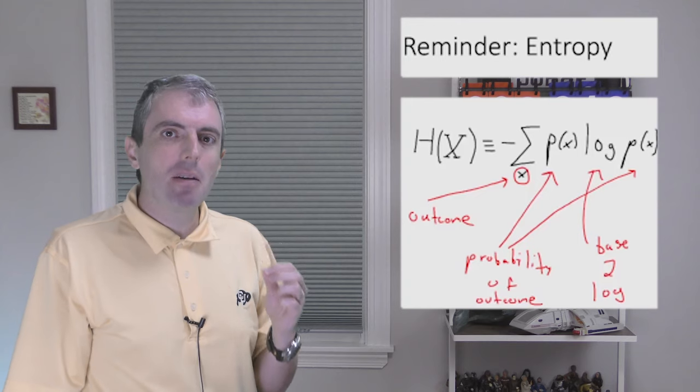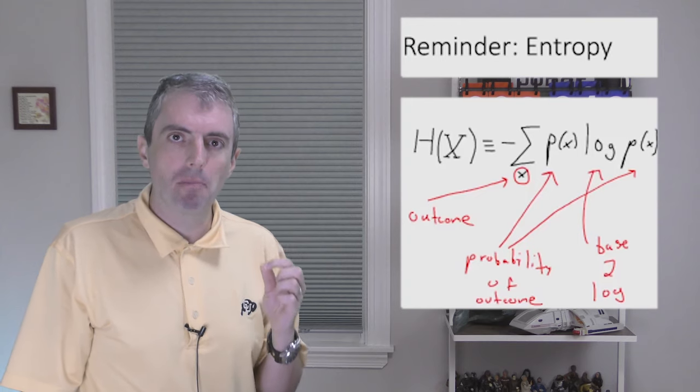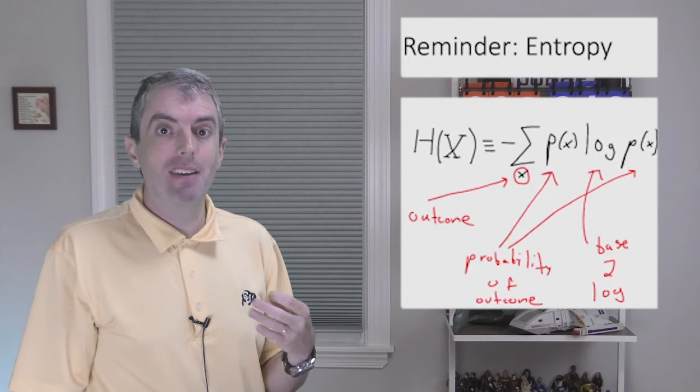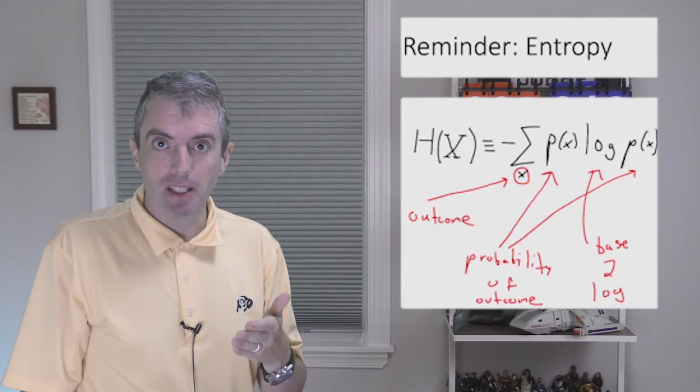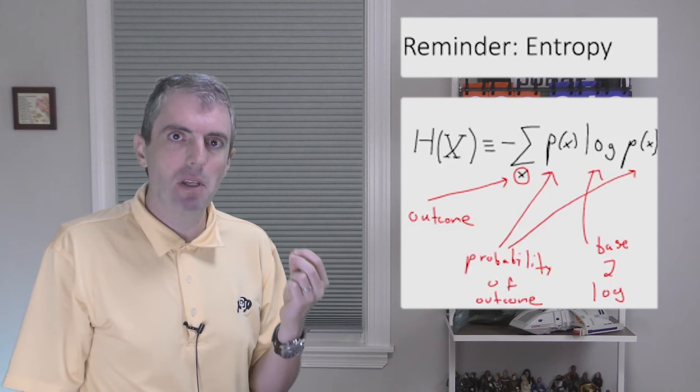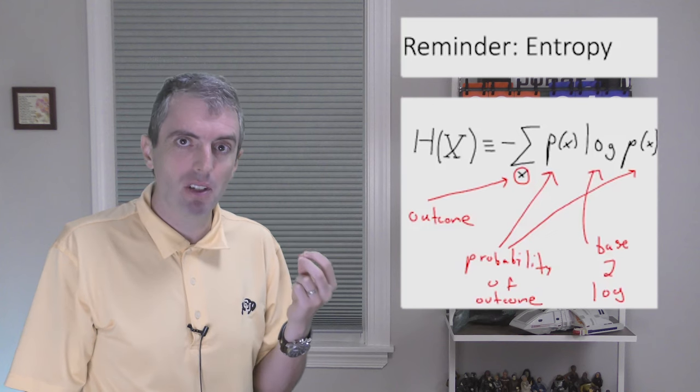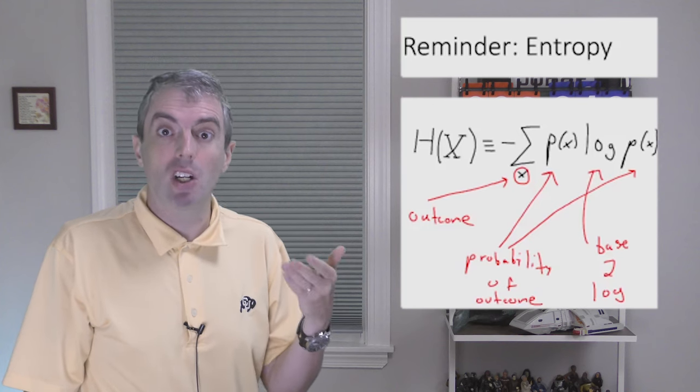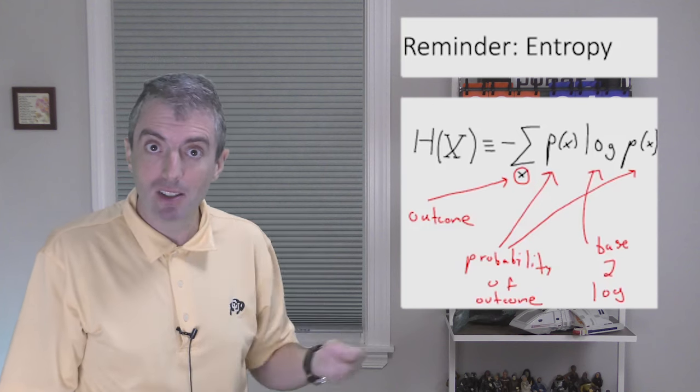Conceptually, this is the number of bits you need to represent a distribution. You can think about it as the following. The negative log of p of x is how many bits you need to represent a single outcome. The lower the probability, the more complicated the representation you need.